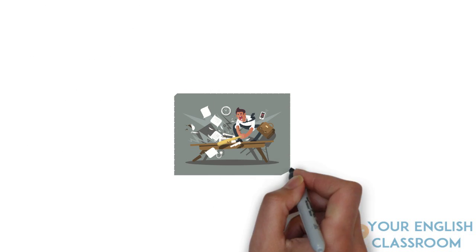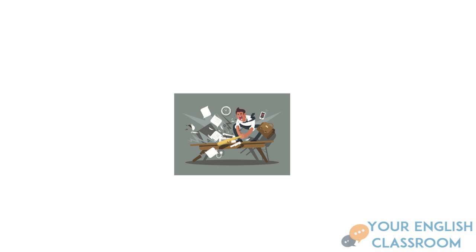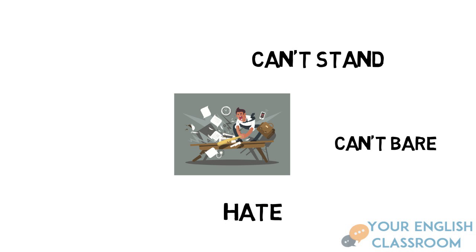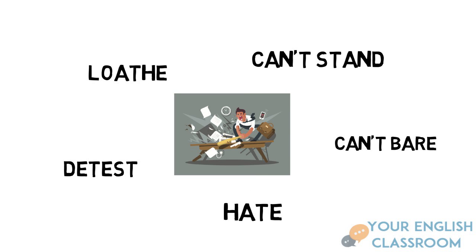So what about that thing you absolutely detest? You can say 'can't stand' — you really don't like it. You can also say 'can't bear,' as in 'I can't bear to see it.' Similarly, 'hate' and 'detest' are strong words, and also 'loathe,' which means you can't stand it at all and you don't want to see it.